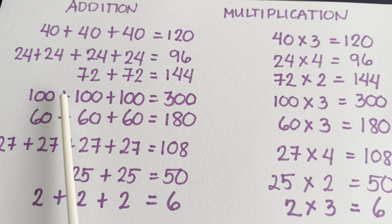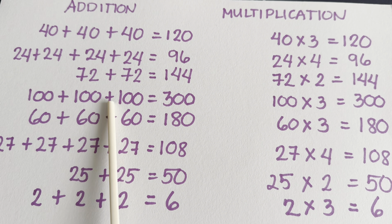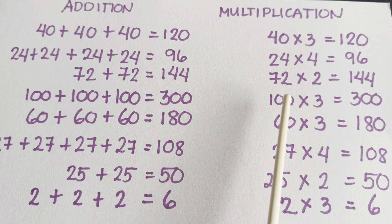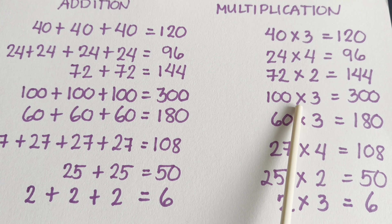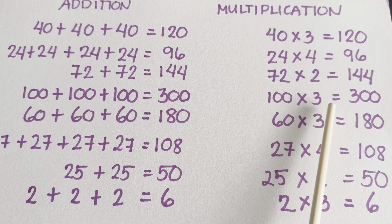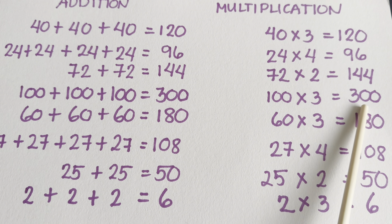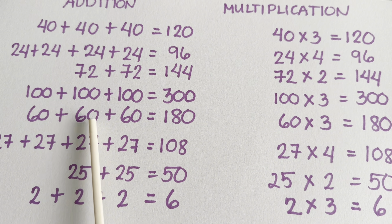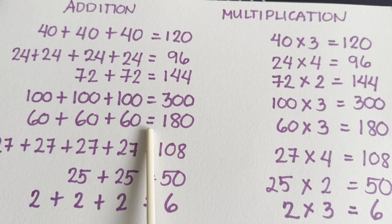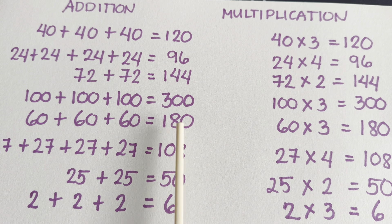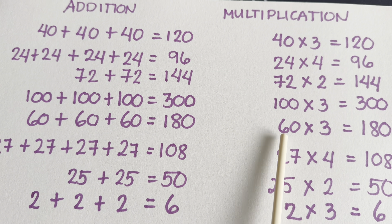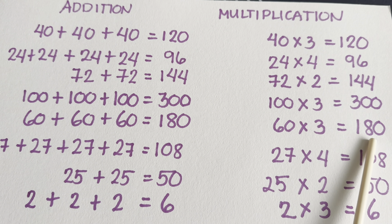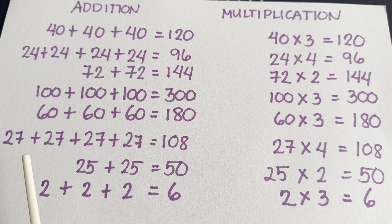100 plus 100 plus 100 is equals to 300. 100 multiplied by 3 is equals to 300. 60 plus 60 plus 60 is equals to 180. 60 multiplied by 3 is equals to 180. Let's try another one.